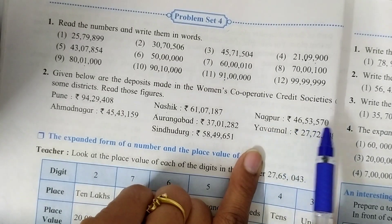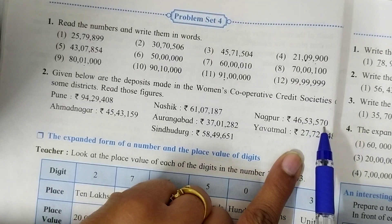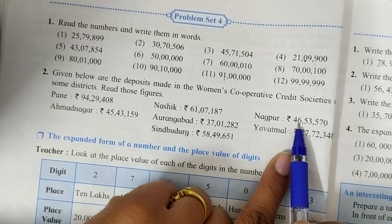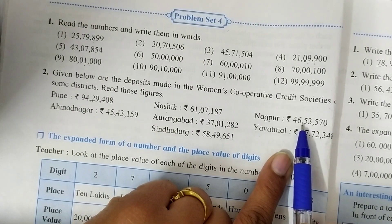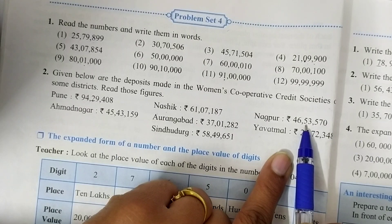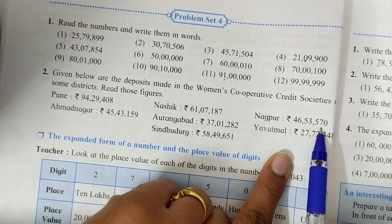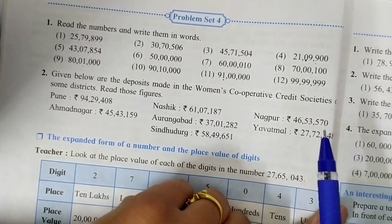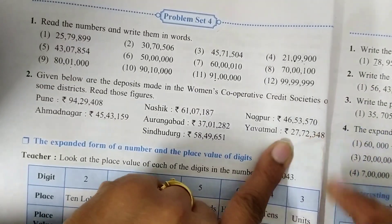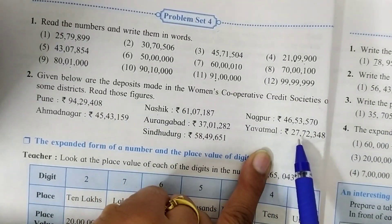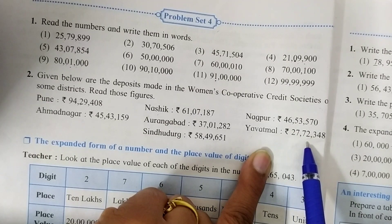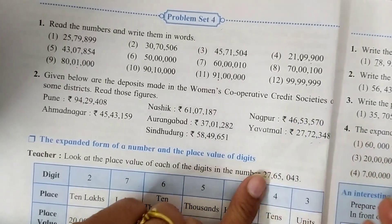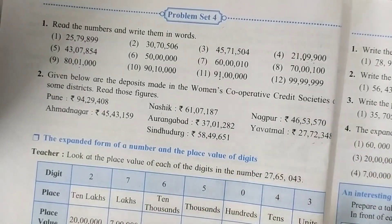Look at Nagpur: how many rupees deposited in the cooperative credit society? Counting tens, hundreds, thousands, ten-thousands, lakh and ten-lakh — forty-six lakh fifty-three thousand five hundred and seventy. Count the places in your mind. For Yavatmal, it is twenty-seven lakh seventy-two thousand three hundred and forty-eight. This is our Problem Set 4 solution.